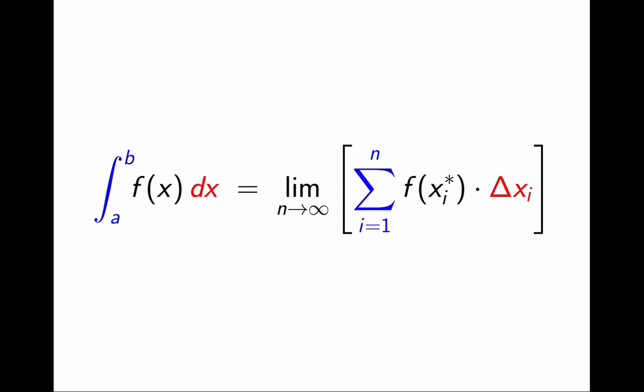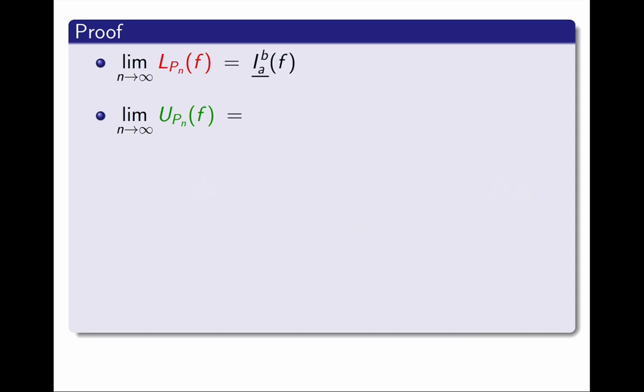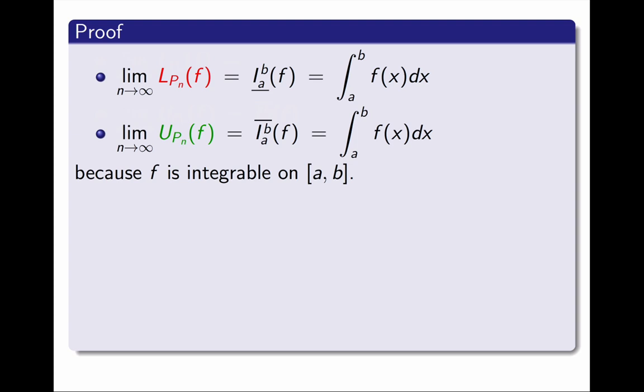The proof of this theorem turns out to be quite simple if we use everything we know so far. We know what happens when we take limits of lower or upper sums. The limit as n approaches infinity of the Pₙ lower sum of f is the lower integral of f, and the limit of the Pₙ upper sum is the upper integral. That is always true for any bounded function, given the choice of partitions we used. But since the function is also integrable, we know that the lower and upper integrals are both the integral.